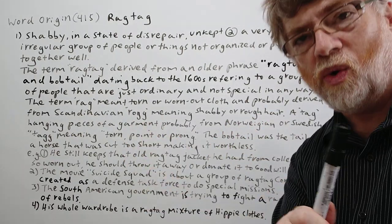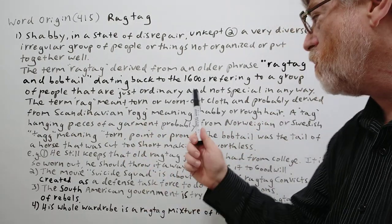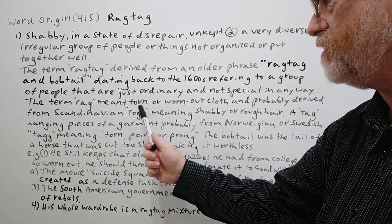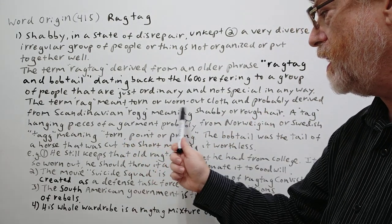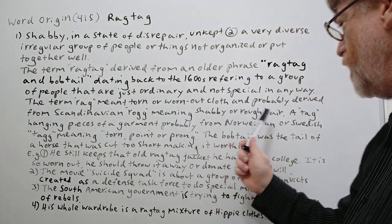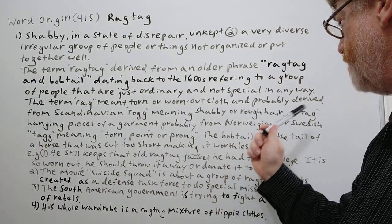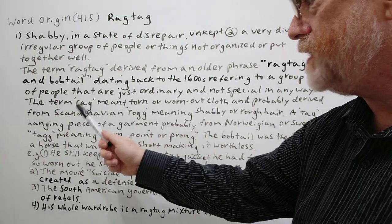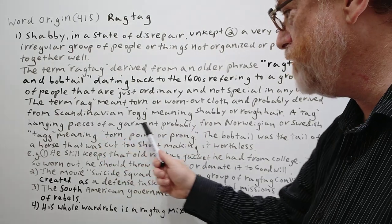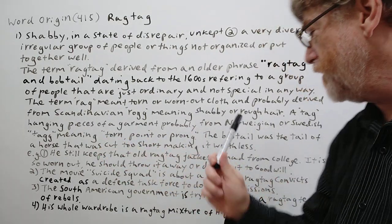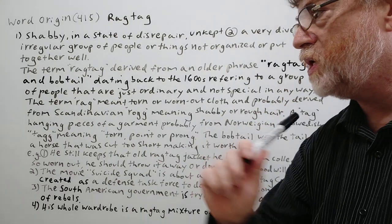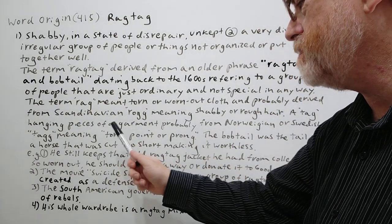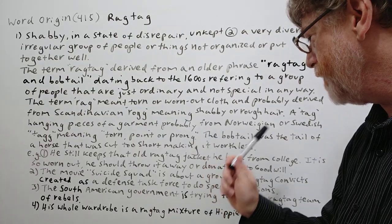The term 'rag' meant torn or worn-out cloth, and probably derived from the Scandinavian word 'rag,' meaning shabby or rough hair. 'Tag' basically meant hanging pieces of a garment, probably from the Norwegian or Swedish 'hang tag,' meaning torn point or prong.